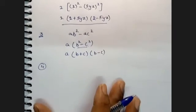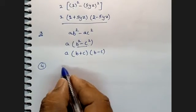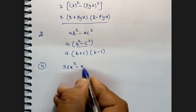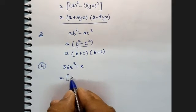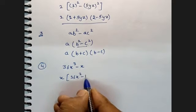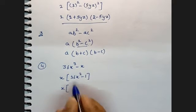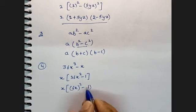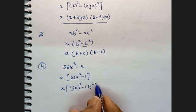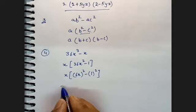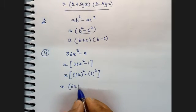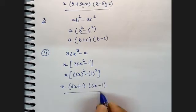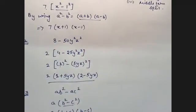Fourth sum: 36X squared Q minus X. X is common, giving X into 36XQ minus 1. Now 36XQ can be written as 6XQ whole squared, and 1 can be written as 1 squared. Applying A squared minus B squared equals A plus B into A minus B. This is the answer for the fourth one.